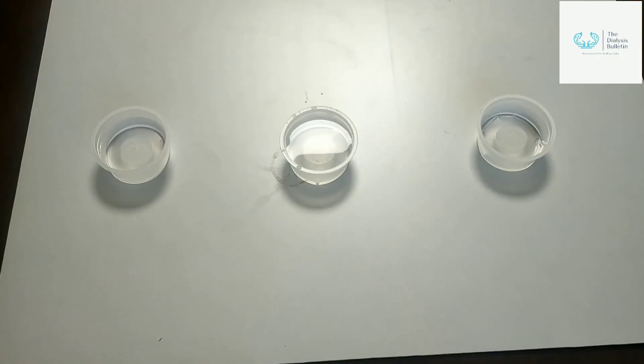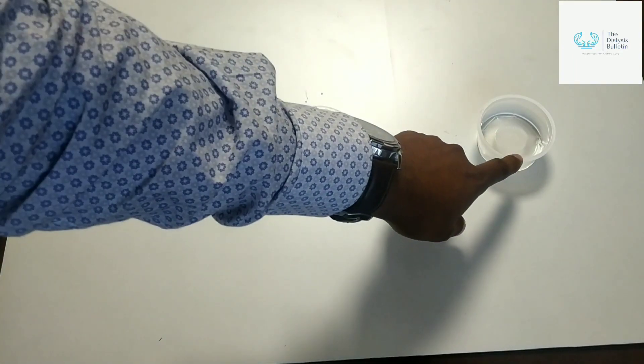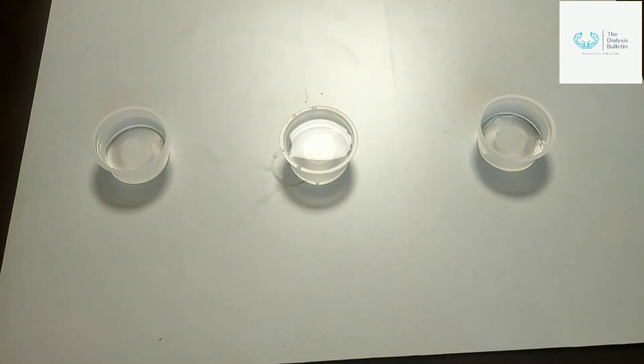Here we will take some water like raw water, softener water, and product water, and we will check the TDS and show the readings. I will measure three types of different water which we generally use in dialysis: one is raw water, second is post-softener water, and third is product water.